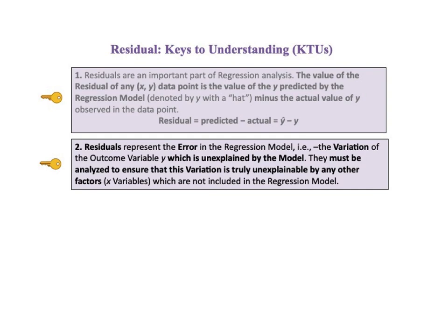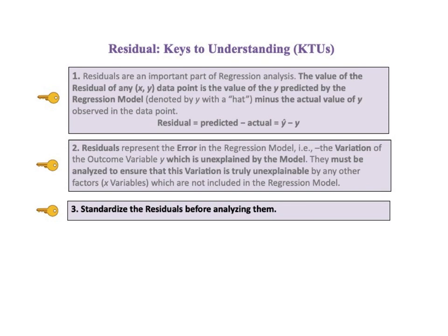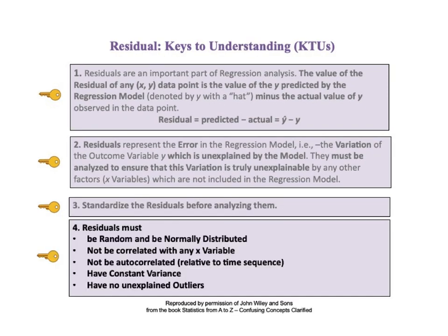The second KTU says residuals represent the error in the regression model, that is variation of the outcome variable Y, which is unexplained by the regression model. Residuals must be analyzed to ensure that this variation is truly unexplainable by any other factors, X variables, which are not included in the regression model. The third key says standardize the residuals before analyzing them. The fourth and final key to understanding says residuals must be random and be normally distributed. They must not be correlated with any X variable. They must not be auto-correlated relative to time sequence. They must have constant variance and must have no unexplained outliers.